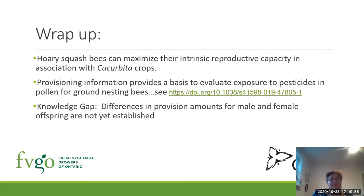To wrap up: hoary squash bees can maximize their intrinsic reproductive capacity in association with Cucurbita crops, and this may be one of the reasons why they have been able to expand their range so well — because Cucurbita crops are grown over a wide area and support these bees really well.